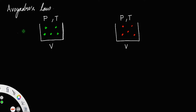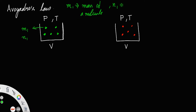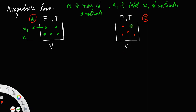Let m1 be the mass of a molecule and n1 represent the total number of molecules in beaker A. Similarly, m2 is the mass of a molecule in beaker B, and n2 represents the total number of molecules in beaker B.